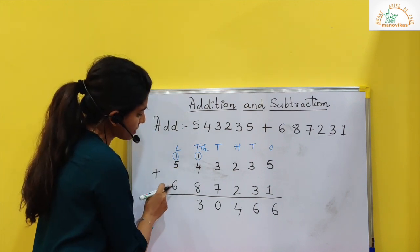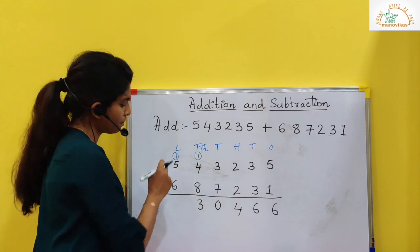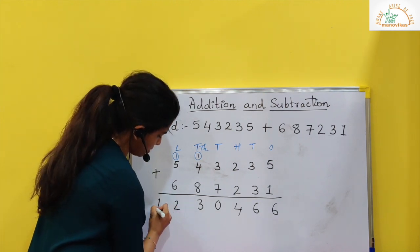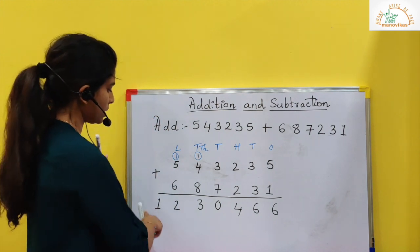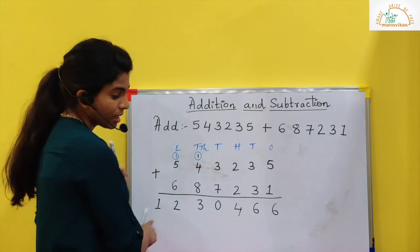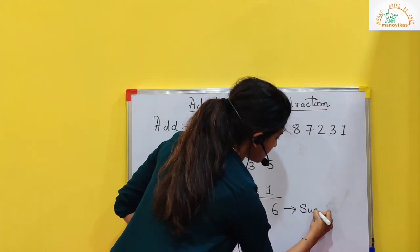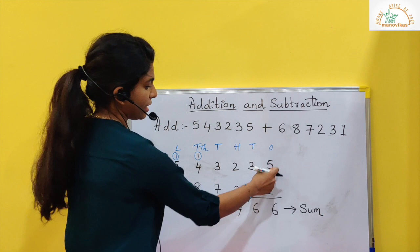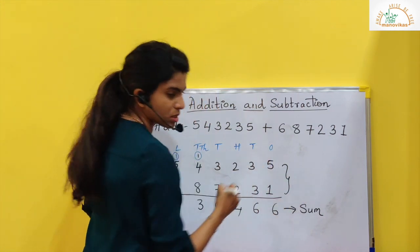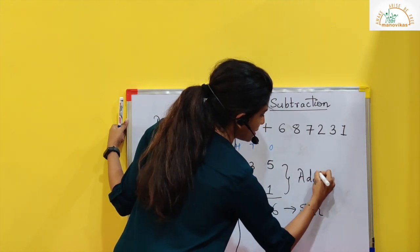Now you add 6 plus 5 is 11, plus 1 is 12. So 2 here and 1 here. So this is the result we get. This result is known as sum.